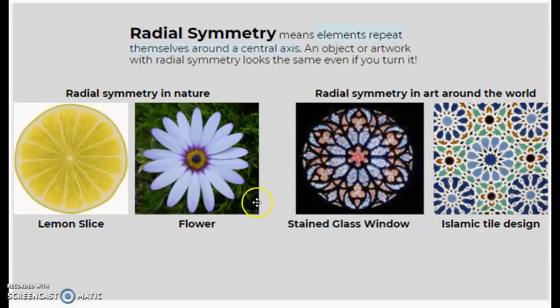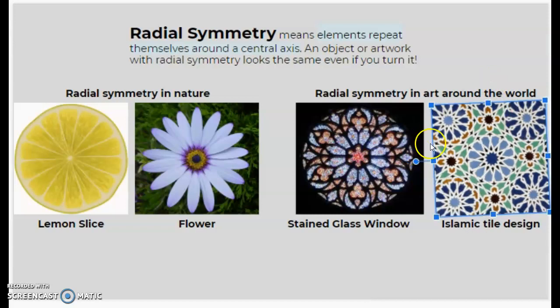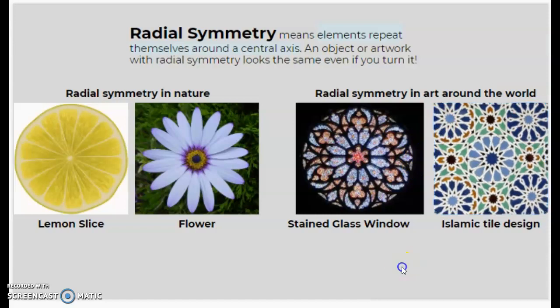You'll notice that even if you turn the artwork, let's say you just turn it 90 degrees, it's still the same, it looks exactly like it did before I turned it. That's one way you know it's radial symmetry. Radial just means round.